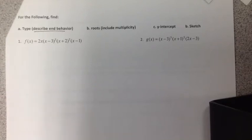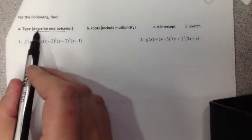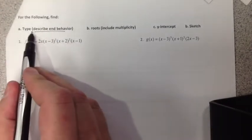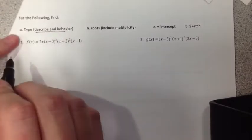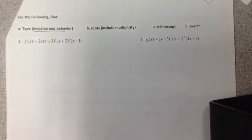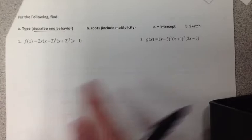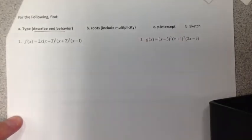So how do we graph polynomials? To do this, I basically do a four-step process. We have to first describe the end behavior, get the type of polynomial. That's what we call that lead coefficient test. We have to find the roots, including that multiplicity that we just talked about, the y-intercept, and then we sketch it.